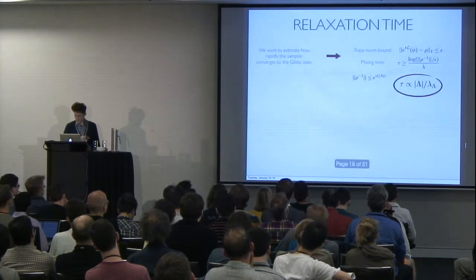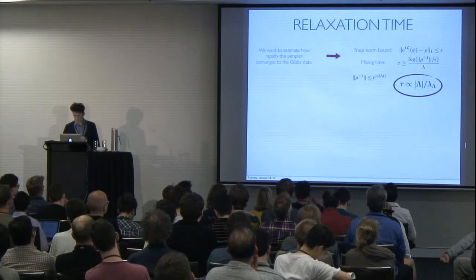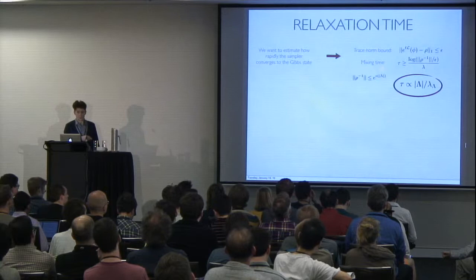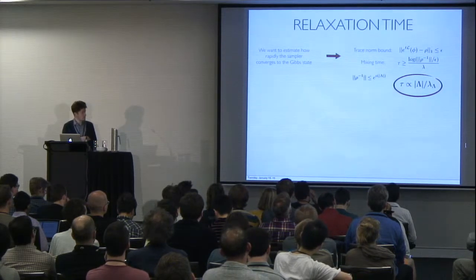Gamma is the gap. Yes, I'm sorry, lambda is the gap. For Gibbs state, you can get a natural upper bound on this term, which goes as an exponential of the volume of the system, of the lattice,